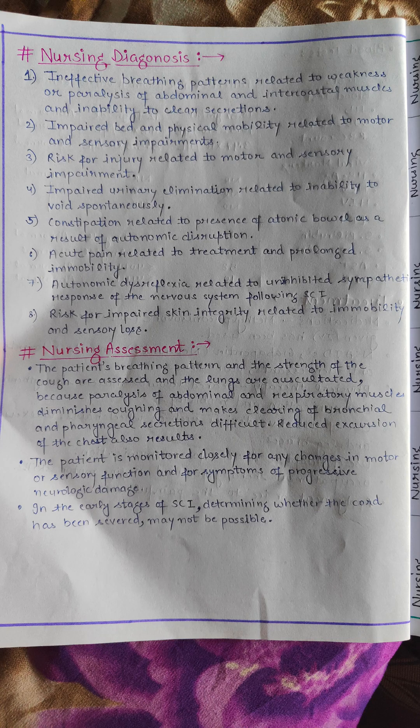Nursing assessment involves the patient's breathing pattern and strength of cough. Lungs are auscultated because paralysis of abdominal and respiratory muscles diminishes coughing. The patient is monitored for changes in motor and sensory function and for symptoms of progressive neurological damage. In the early stages of SCI, we have to determine whether the cord has been severed and assess the extent of injury.